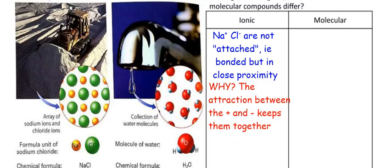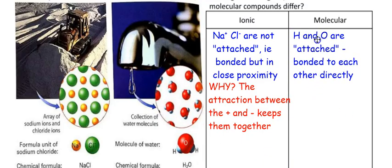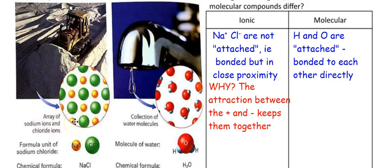Do you see how the H's and O's are attached? They are directly bonded to each other — the H is on the O. That's a huge difference. It's the attraction that keeps sodium and chloride ions in what we call an array of sodium ions and chloride ions. But water is a bunch of individual water molecules.